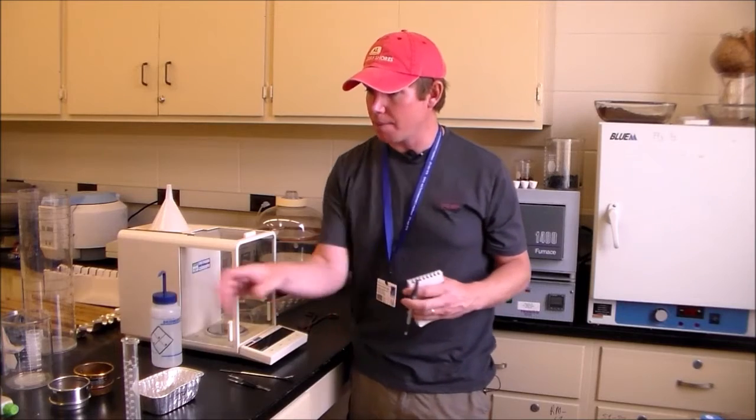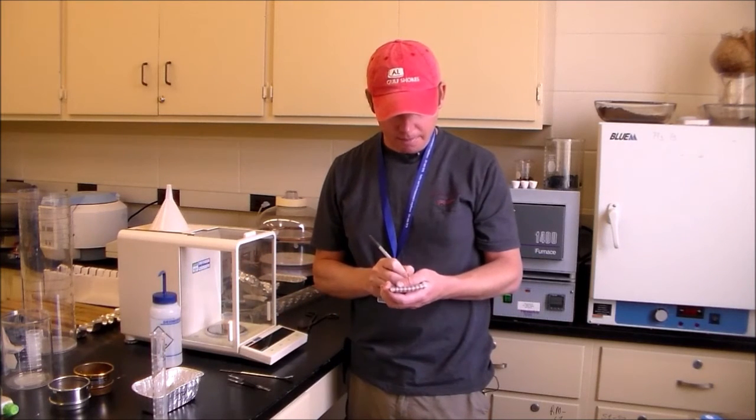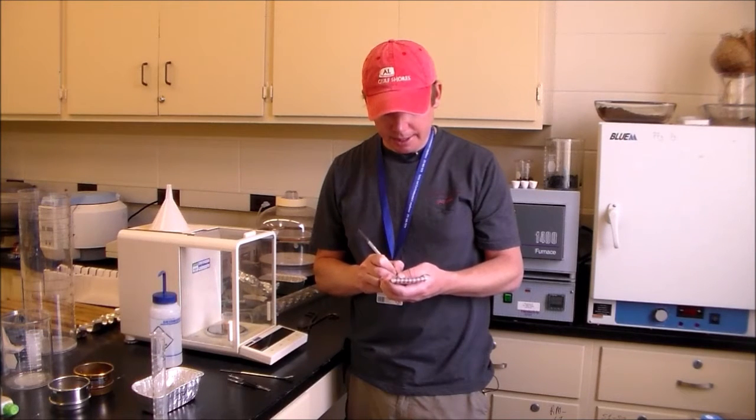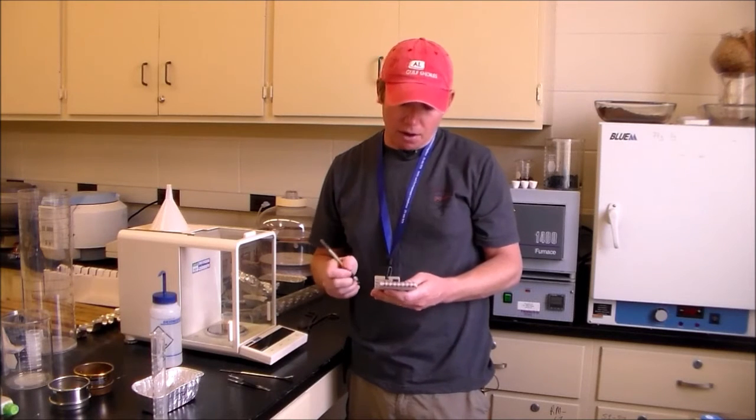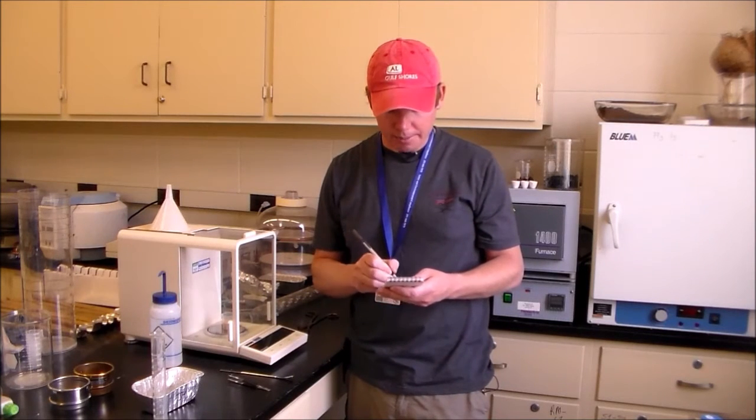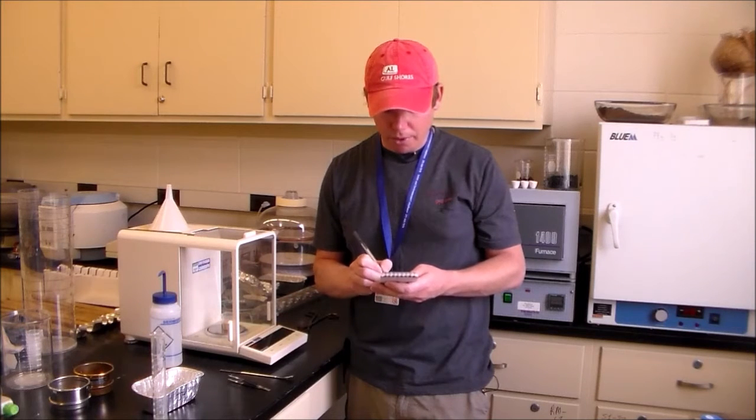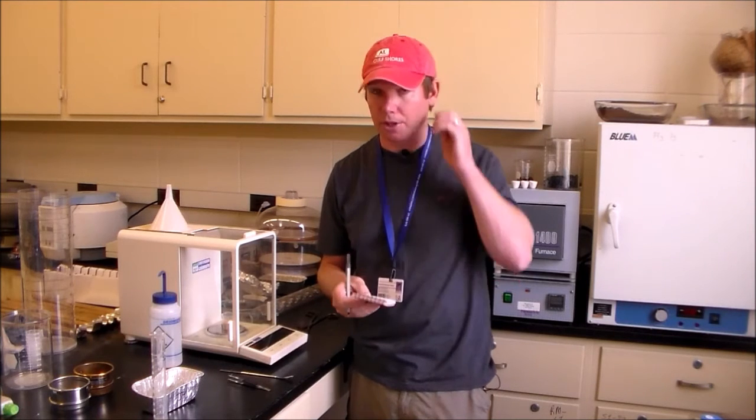So if it's 16.20 grams and we used 10 cubic centimeters, you guys can do this at home without a calculator. We can calculate the dry bulk density. Remember, density is equal to mass over volume. Dry bulk density would be 16.20 grams divided by 10 cubic centimeters. And all we do is move the decimal over by one space. The dry bulk density would be 1.62 grams per cubic centimeter.